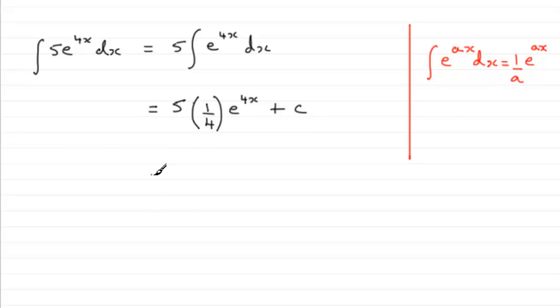And if we tidy this up, we get 5 over 4 e to the power of 4x plus that constant of integration plus c. So I hope you're able to get that one.